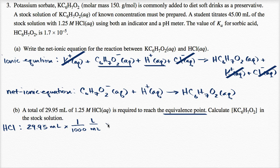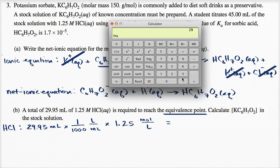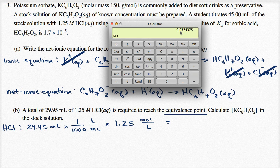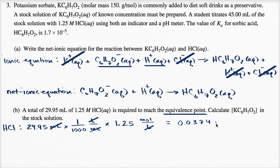Now let's figure out how many moles that is. We multiply by the molarity: 1.25 moles per liter. Let me get my calculator out — 29.95 divided by 1,000, times 1.25. I have three significant figures here and four over here, so the product will have three significant figures: 0.0374. The units work out — milliliters cancels with milliliters, liters cancels with liters — giving us 0.0374 moles.